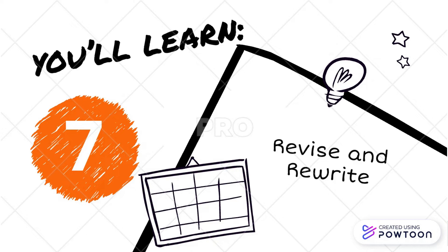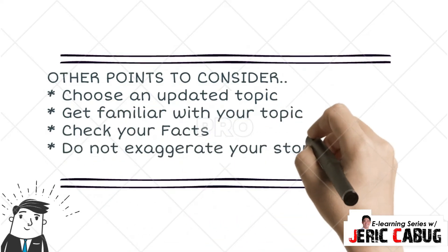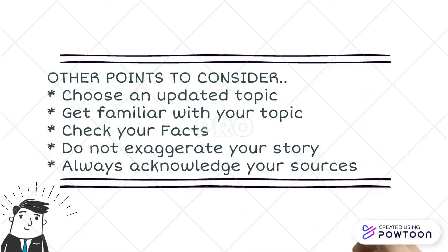That's the end of the tips in science writing. Now let me give you the other points to consider. First, you need to choose an updated topic — for example, coronavirus, which is right now really affecting a lot of lives, houses, companies, businesses, and schools. Second, get familiar with your topic. You cannot give what you don't have. Check your facts and do not exaggerate your story or overuse terms. And lastly, always acknowledge your sources or references, because you need to give credit to the persons who provided those sources.